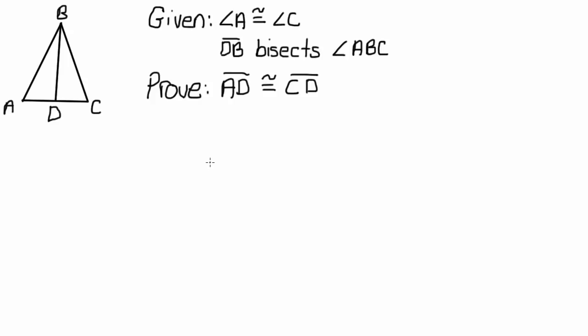Okay, so here's some more proof practice. I know I had requests for some more two-column proofs, so this is two-column proof practice three. Given that angle A is congruent to angle C, and DB bisects angle ABC, prove that segment AD is congruent to segment CD. So here's our little diagram over here.